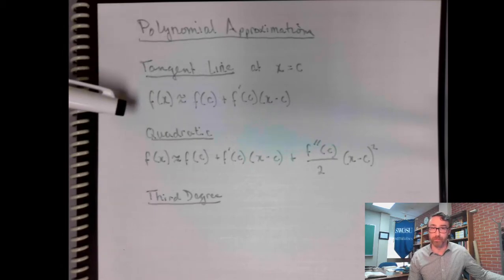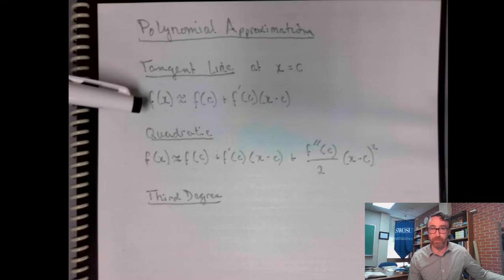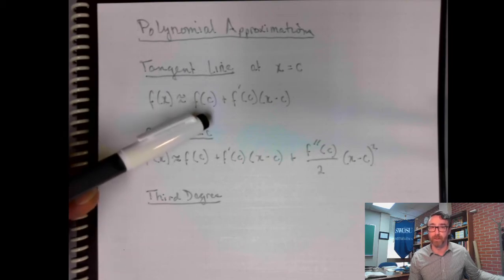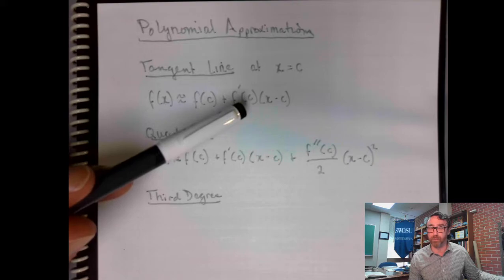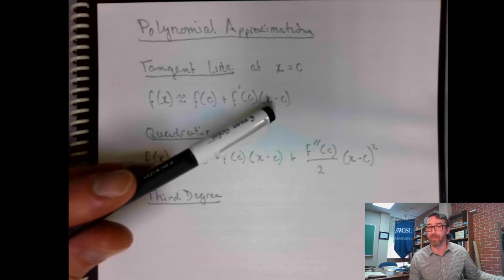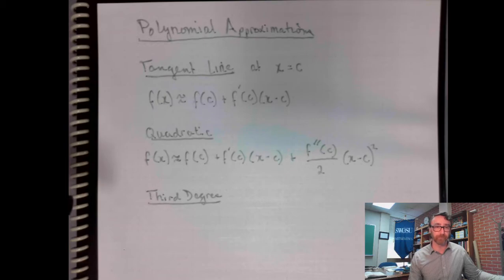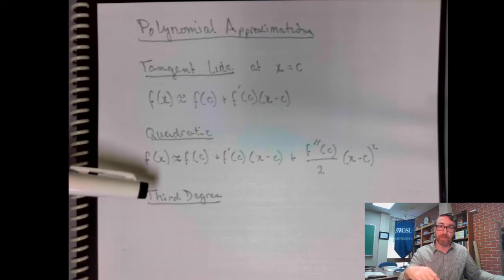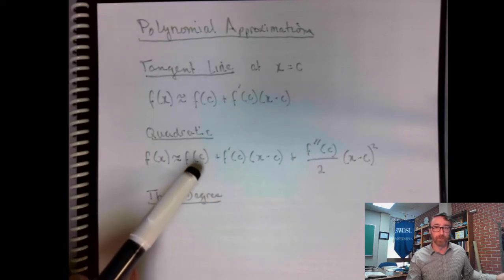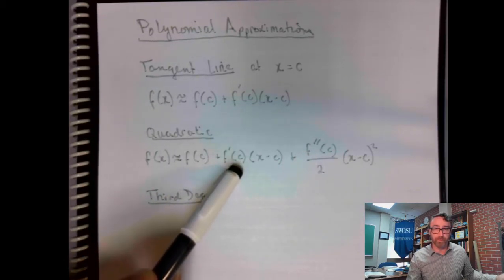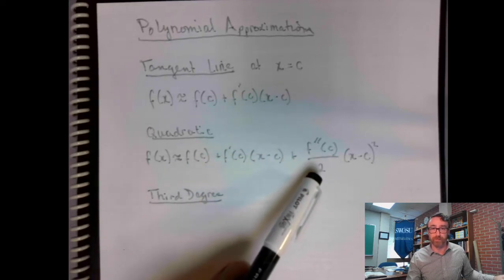So, just to summarize what we did there, our tangent line approximation for f(x) at x equals c can be built by evaluating the function at x equals c, and then to get the slope of your tangent line, you differentiate and evaluate that, so you do f prime of c and you need to multiply by x minus c. To get the bend in your approximation to match the bend in the function, you've got to incorporate the second derivative, which measures the concavity. So, evaluate the function, evaluate the derivative, evaluate the second derivative. You need to divide that one by 2.